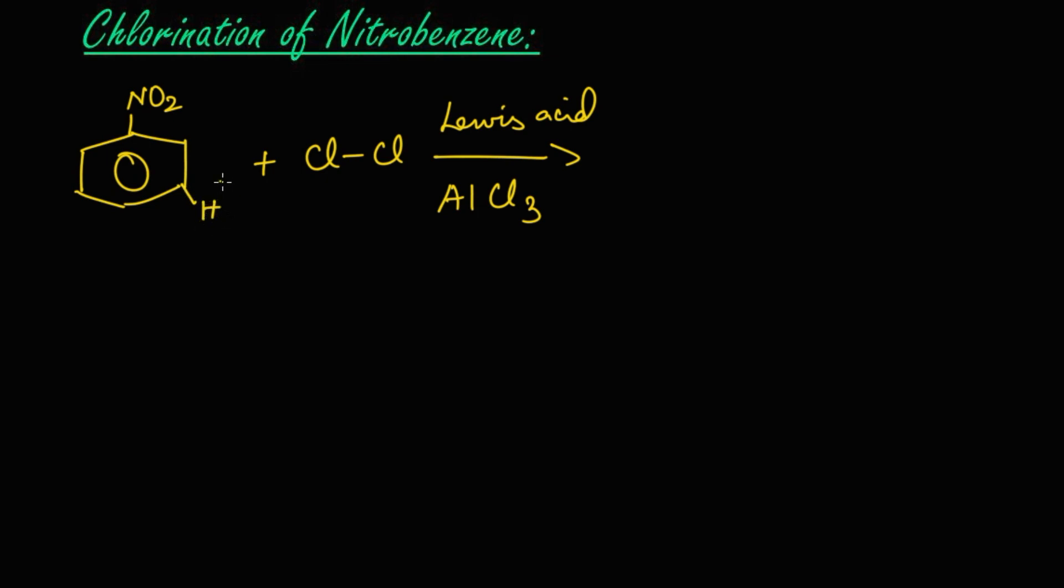Here there will be a hydrogen in the meta position. This hydrogen and one chlorine atom will leave as HCl, and this chlorine will replace the hydrogen which is in the meta position. So we get meta-chloro nitrobenzene.